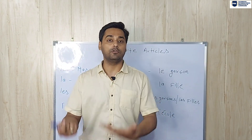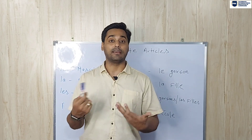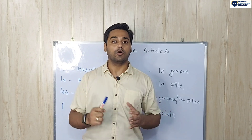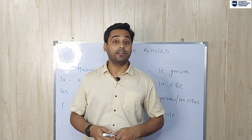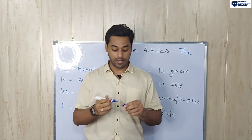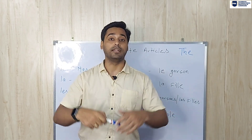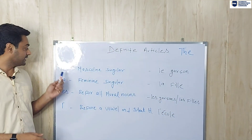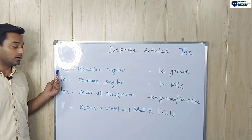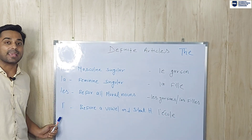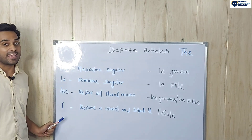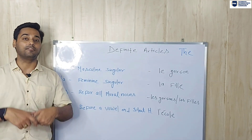Now we know when to use definite articles. Let's learn what definite articles are in French and how we use them. In English, we only have one definite article — 'the'. In French, we have more than one definite article. Look here — these are the definite articles in French.